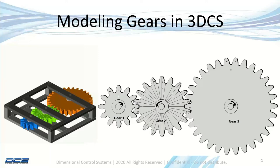Today I'm going to highlight some of the DCS capabilities for modeling gears. This is for high accuracy metal mechanisms that have complex contact shapes, such as gear teeth, and rotary motions and moves.